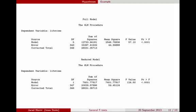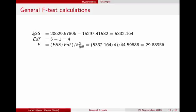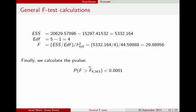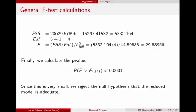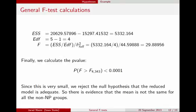The calculation proceeds as follows: compute the extra sum of squares (difference in SSEs), divide by the extra degrees of freedom, then divide by the pooled variance from the full model. The F statistic turns out to be almost 30 — a very large value. Comparing that to an F distribution with 4 numerator degrees of freedom and 343 denominator degrees of freedom gives an extremely small p-value. We reject the null hypothesis that the reduced model is adequate, giving us evidence that the mean is not the same for all non-NP groups.